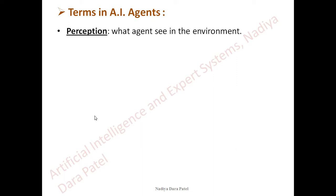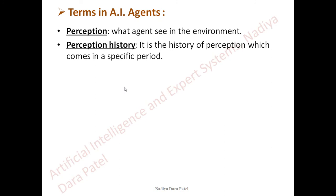Now let us see the terms and terminologies. Perception is what the agent is going to see in the environment. Perception history — as the child experiences the garden and flowers for the first time, he keeps these memories stored: the color of the flower, the smell, the butterflies, and the environment where these flowers grew. This is perception history, which builds over a specific period. In future, visiting another garden in the city, he will recall the memory of the natural garden from his farmhouse.